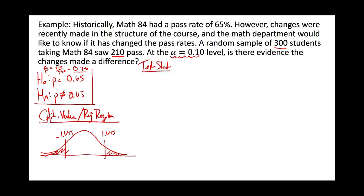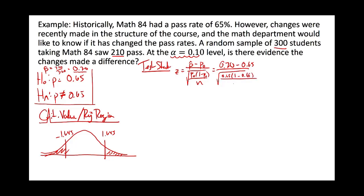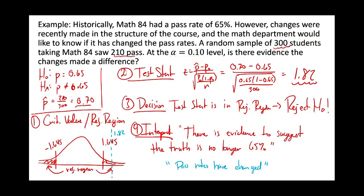After establishing the critical value and rejection region, you need to calculate the test statistic to make your decision. It's the z-score from the central limit theorem for proportions, and we use the claim proportion inside the formula — because we're always working under the assumption the claim is true. So we take our sample proportion of 70% and use 65% everywhere else, with n = 300.